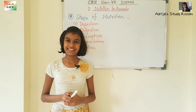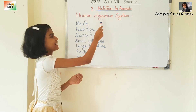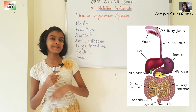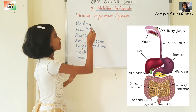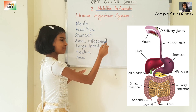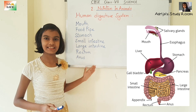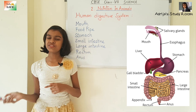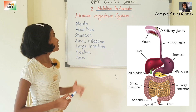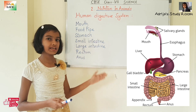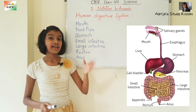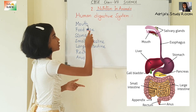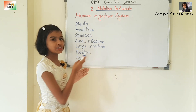Now let's learn about the human digestive system. We have already learned about the human digestive system in previous classes; in this class we are going to learn about it in detail. It starts from the mouth, then goes to the food pipe, then stomach, small intestine, large intestine, rectum, and finally ends at the anus. This is also known as the alimentary canal or digestive tract, which is nearly 8 to 10 metres long in adults. There are many glands associated with the alimentary canal, like salivary glands, liver, and pancreas, which secrete juices that help in digestion. In this video we will learn about the mouth, and in the next video we will cover the other organs.